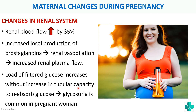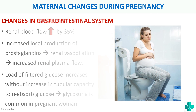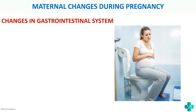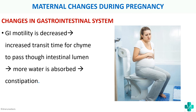In the gastrointestinal system, GI motility is decreased, meaning there is an increased transit time for chyme to pass through the intestinal lumen. This leads to more water absorption and can cause constipation, which is especially difficult for pregnant females.